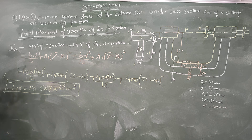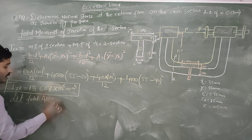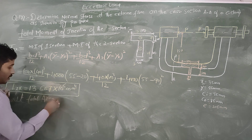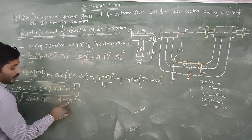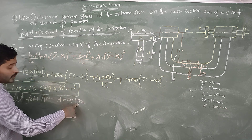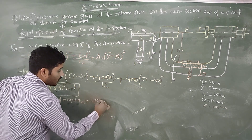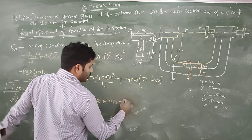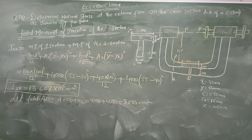Total area A = A1 + A2 = 4000 + 4000 = 8000 mm². Now we find the bending moment for the C-clamp. Bending moment Mb = P × e = 80 × 10³ × 205 = 16.4 × 10⁶ N·mm.